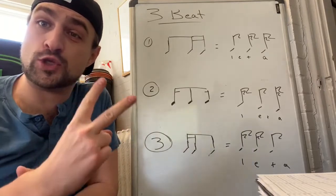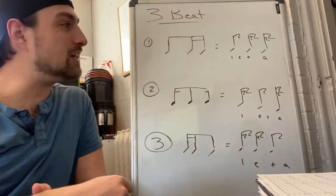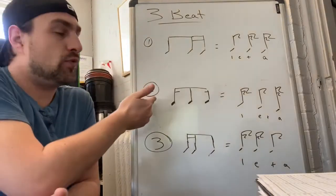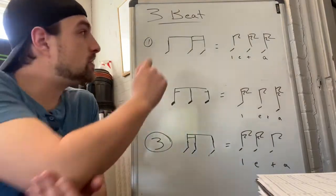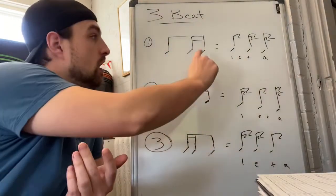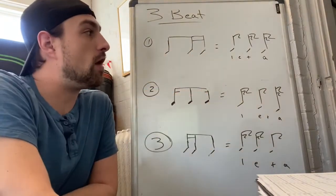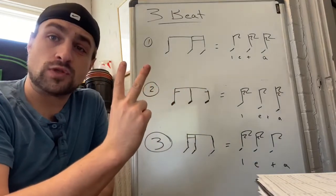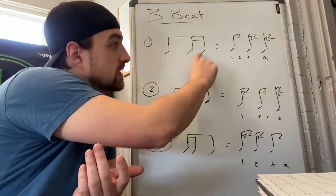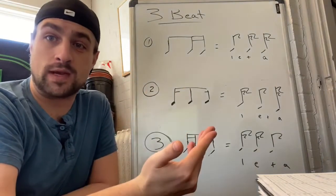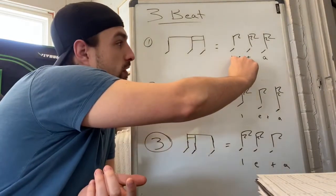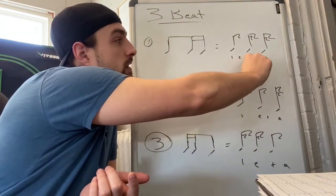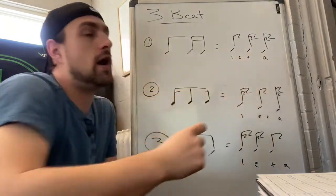It involves one eighth note and two sixteenth notes. As you can see, we have three examples right here. Our first example starts with the eighth note first, followed by the two sixteenth notes. The first eighth note will get two counts, and then the two sixteenth notes will each get a count. The first hit falls on one and e, the next one comes on and, and the third on ah.